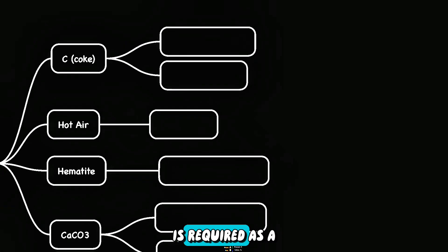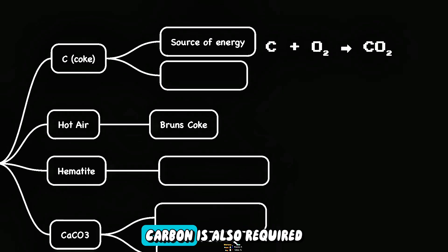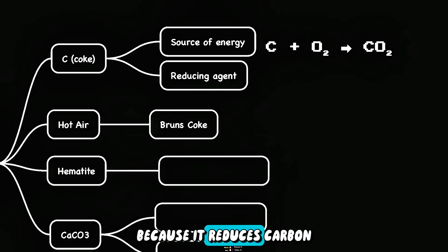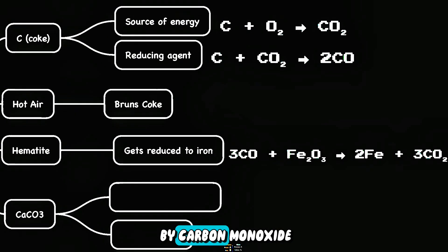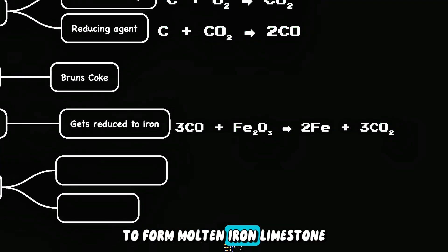Carbon or coke is required as a source of energy because it burns in hot air to form carbon dioxide. Carbon is also required as a reducing agent because it reduces carbon dioxide to form carbon monoxide. Iron oxide in hematite gets reduced to iron by carbon monoxide to form molten iron.